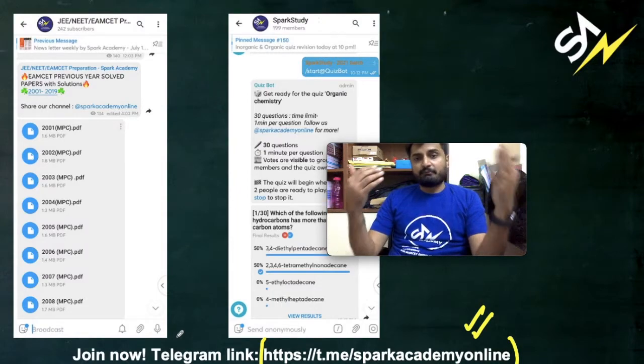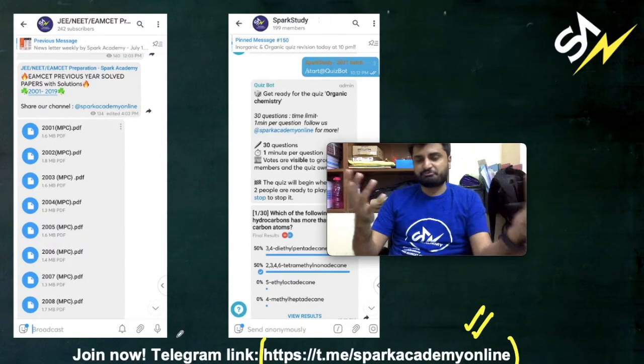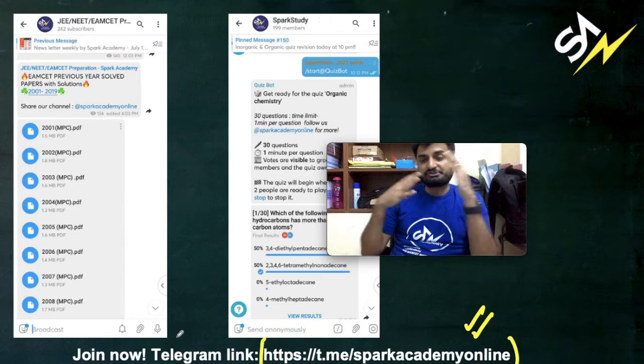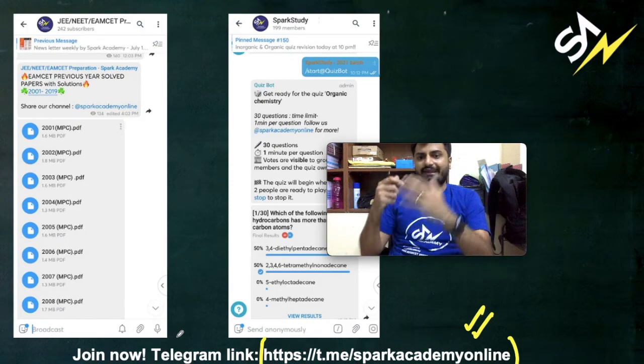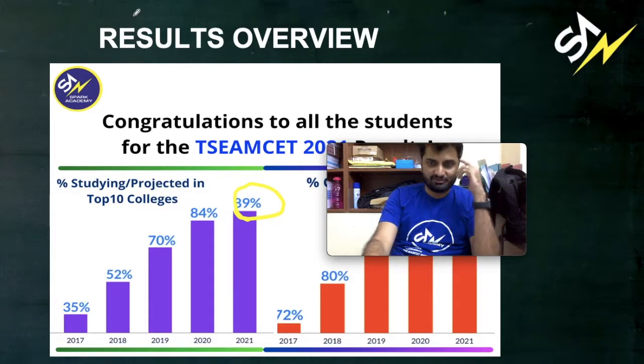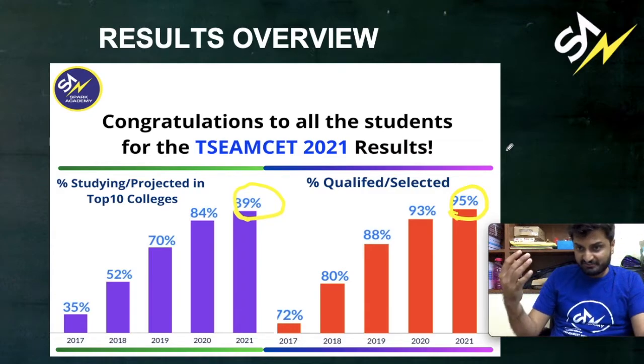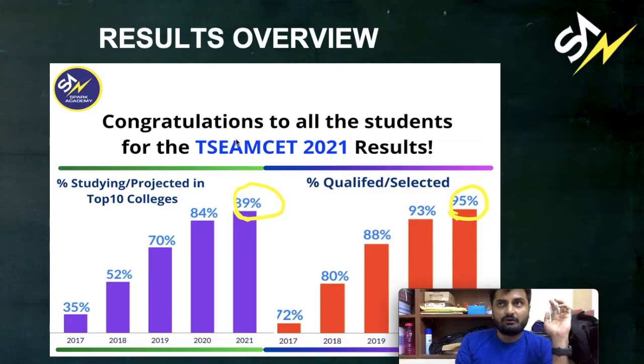You can join our telegram group link where we are sharing a lot of study material, strategy tips or any sessions which we conduct on YouTube or any updates with regards to admissions and the batches. You will be finding it. The link is given below or you can just go to telegram and type Spark Academy Online, you will be finding our telegram channel as well. And talking about the results, we have got some very good results this time despite the pandemic, despite it being the online classes.